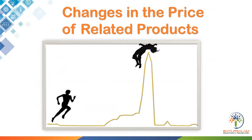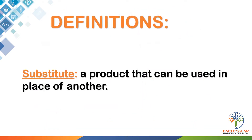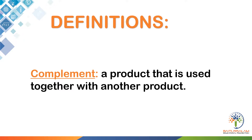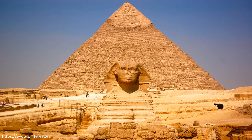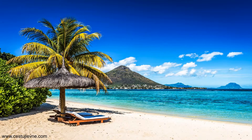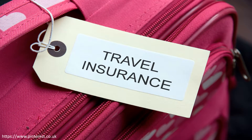Changes in the price of related products. A substitute is a product that can be used in place of another. A complement is a product that is used together with another product. An increase in demand can be caused by a rise in the price of a substitute product. If the price of holidays to Egypt rises, demand for holidays to Mauritius may increase. Demand will also increase if the price of a complement falls — if travel insurance becomes cheaper, demand for holidays to most destinations will increase.